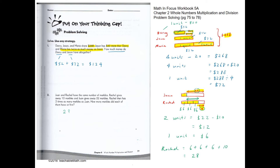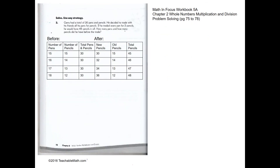So the answer is 28 marbles each. Question 3. Jerry had 30 pencils and pens altogether. He decided to trade all his pens for pencils. If he traded every pen for two pencils, he would have 48 pencils in all. How many pens and pencils did he have before the trade?